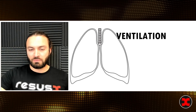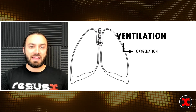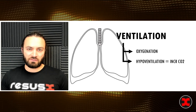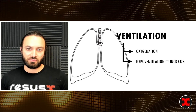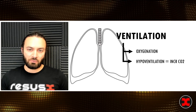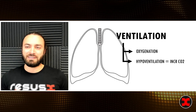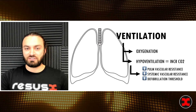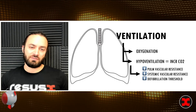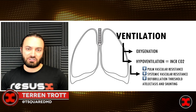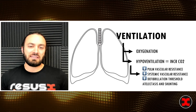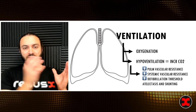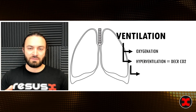What does ventilation itself do? Our goal is adequate oxygenation and minute ventilation for CO2 management. In hypoventilation, we get an increase in CO2 with quite a few downfalls: increased pulmonary vascular resistance, decreased systemic vascular resistance, and it actually makes it harder to defibrillate our patients. This increased CO2 and subsequent acidosis leads to atelectasis and further shunting, which can make multiple factors even worse.